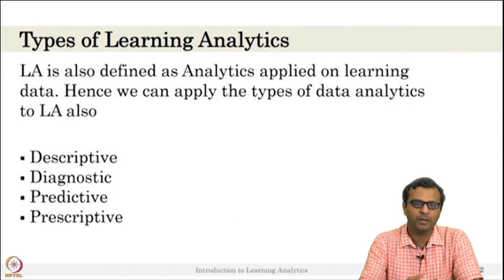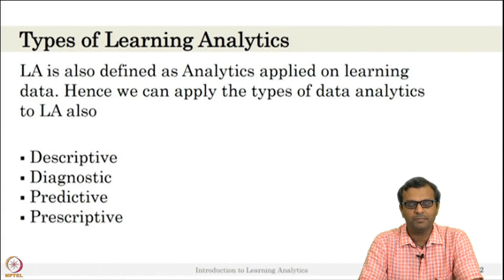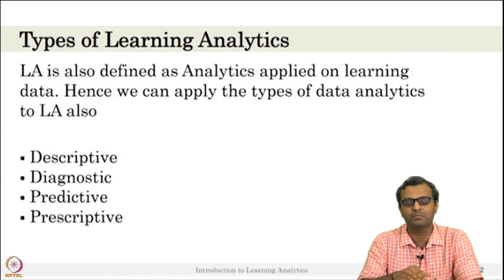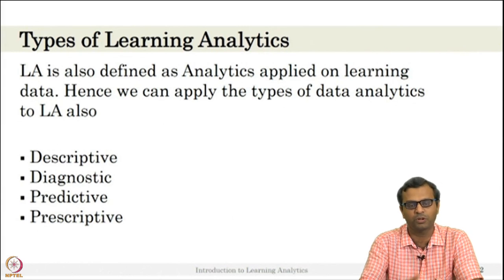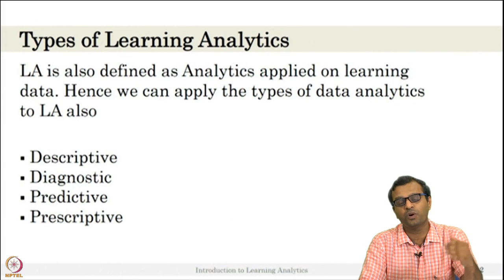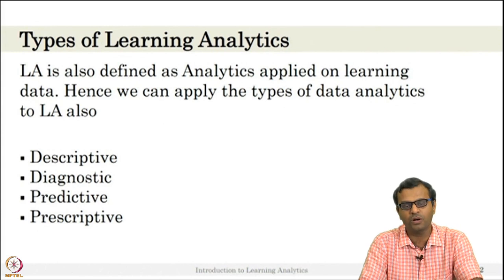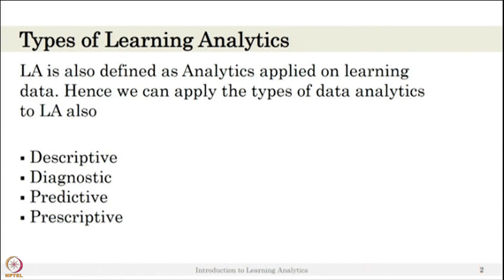The fourth type of analytics is called prescriptive analytics. In prescriptive analytics, you want the user to achieve some level, but the user is currently at a different level. You determine what kind of information, hints, or feedback you can provide so that the user can achieve the goal — that is called prescriptive analytics.